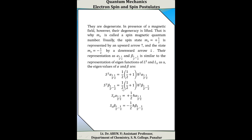The eigenvalue equations are: S²|alpha(1/2,1/2)⟩ = (1/2)(1/2+1)h-cross² × alpha(1/2,1/2); S²|beta(1/2,−1/2)⟩ = (1/2)(1/2+1)h-cross² × beta(1/2,−1/2); S_z|alpha(1/2,1/2)⟩ = +1/2 × h-cross × alpha(1/2,1/2); S_z|beta(1/2,−1/2)⟩ = −1/2 × h-cross × beta(1/2,−1/2).